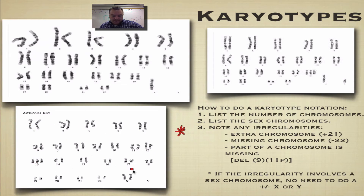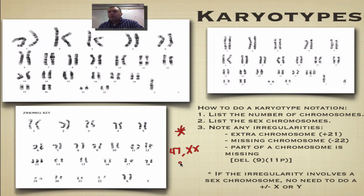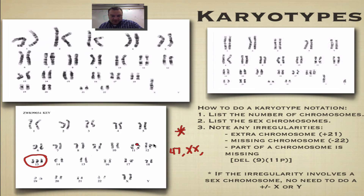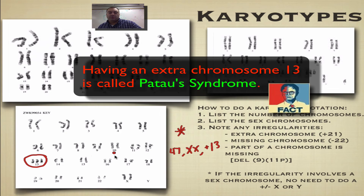If there's one group with three chromosomes instead of a pair, then this individual has 47 chromosomes. The next thing you do is list the sex chromosomes — this individual has two X chromosomes, so XX. That tells me immediately this is a female with an extra chromosome. Now I have to note the irregularity: since there are 47 chromosomes and there's an extra, in this case it's a plus 13. So this person would be notated as 47 XX +13.